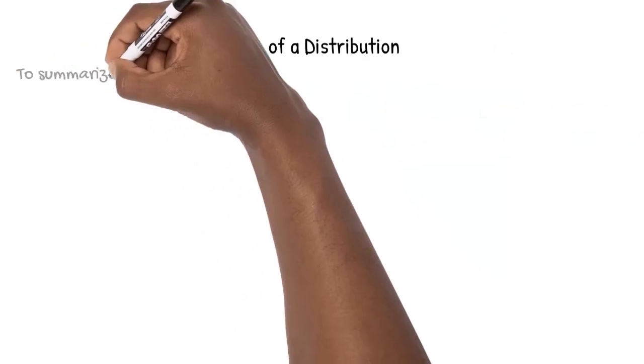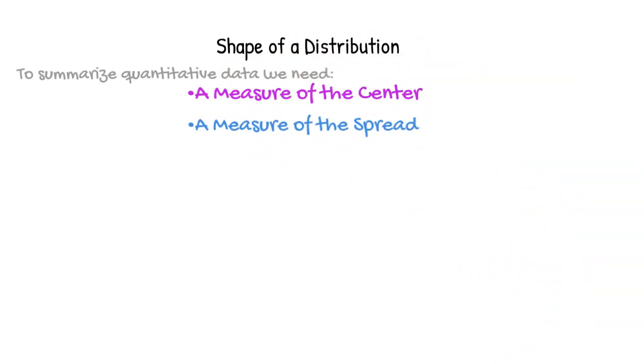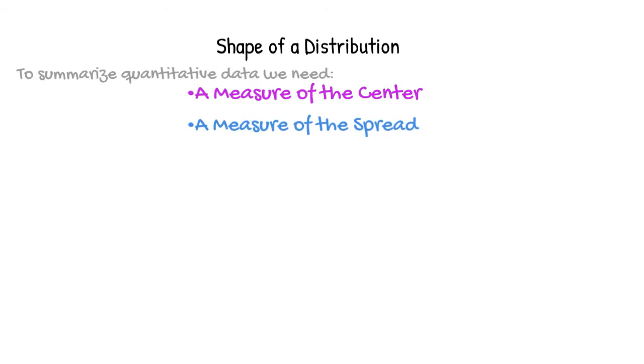To summarize quantitative data, we need a measure of the center. By this, I'm referring to the mean or median. We also need a measure that tells us how the data is spread. This could be either range and interquartile range or standard deviation. We'll look at how to calculate these numbers in future lessons.